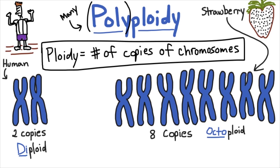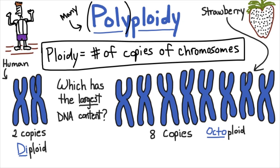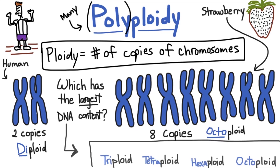So if we wanted to use a sample for our extraction that has a lot of DNA, which of the following would we want to use? An organism that's triploid, tetraploid, hexaploid, or octoploid.